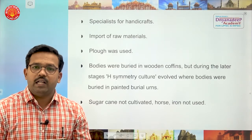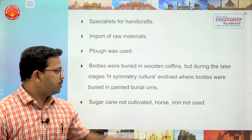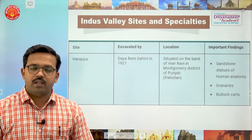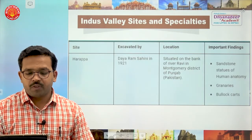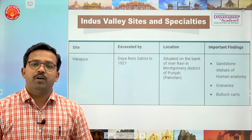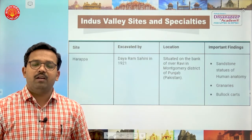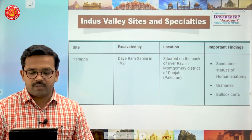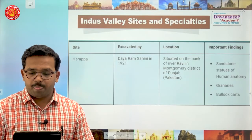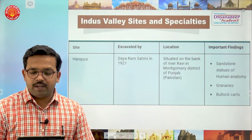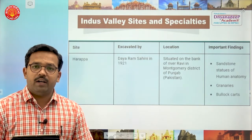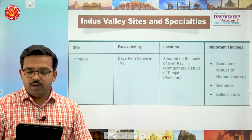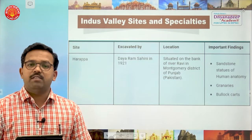Now let us look at important Indus Valley sites and their specializations. The first important site is Harappa, excavated by Daya Ram Sahni in 1921. This Harappa site is situated on the bank of river Ravi in Montgomery district of the current Punjab province of Pakistan. Important findings include a sandstone statue of human anatomy, granaries where grains could be stored, and bullock carts.